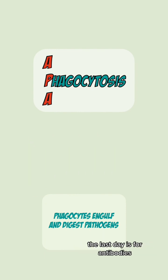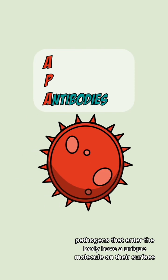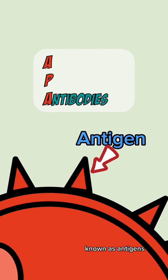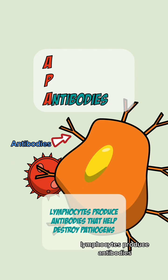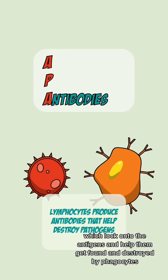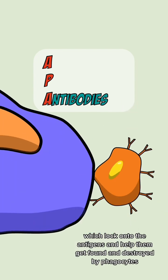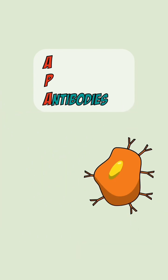The last letter is for antibodies. Pathogens that enter the body have a unique molecule on their surface known as antigens. Lymphocytes produce antibodies which lock onto the antigens and help them get found and destroyed by phagocytes.